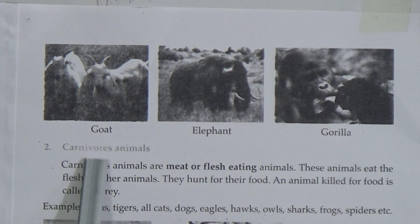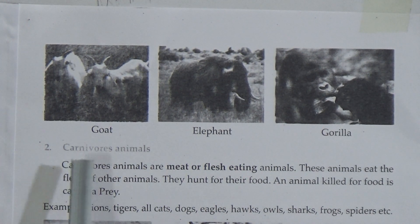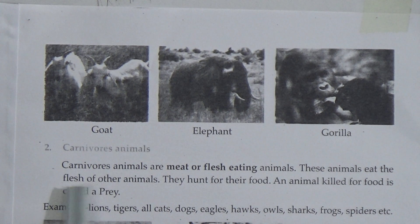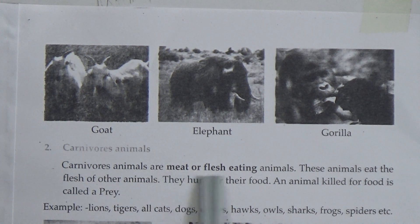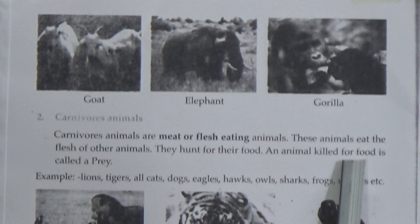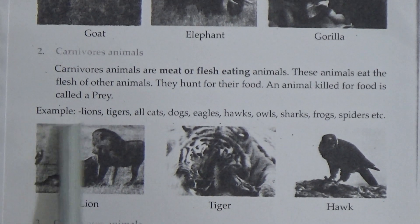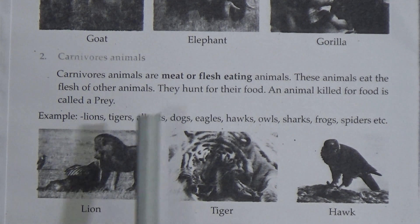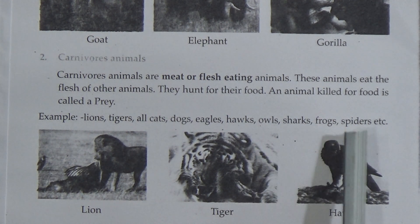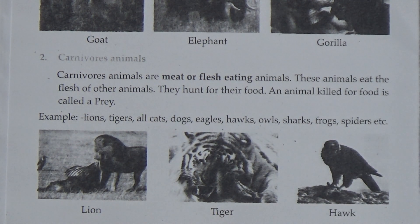Here is carnivorous animals. Carnivorous spelling is C-A-R-N-I-V-O-R-E-S. Carnivorous animals are meat or flesh eating animals. They eat the flesh of other animals and hunt for their food. An animal killed for food is called a prey. Examples: lion, tigers, owl, cats, dogs, eagles, hawks, owls, sharks, frogs, spiders, etc. And here is the picture of lion, tiger, hawk.